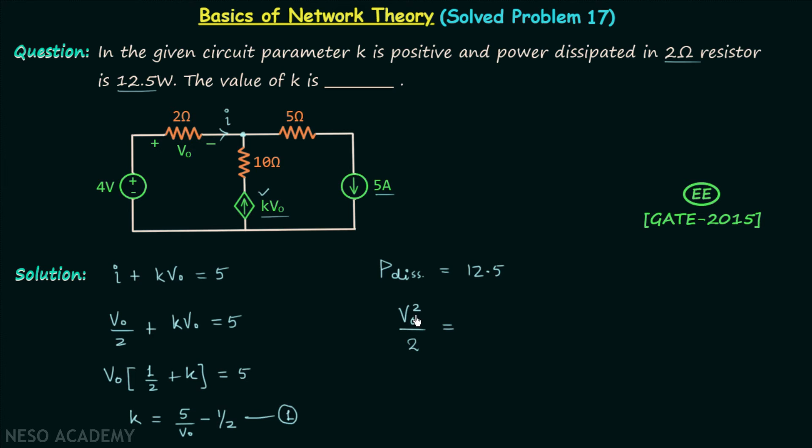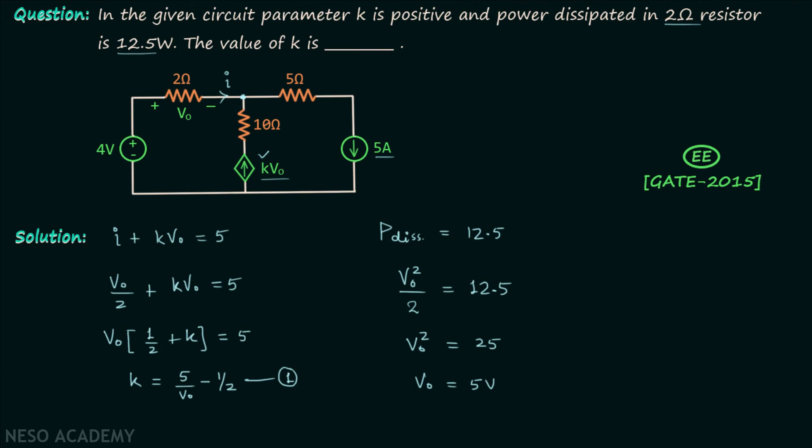So v0 square divided by 2 will be equal to 12.5, or we can write v0 square will be equal to 25.